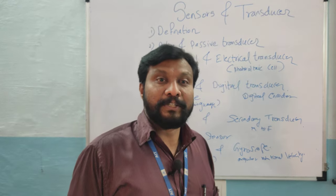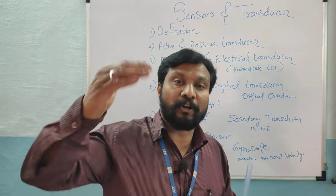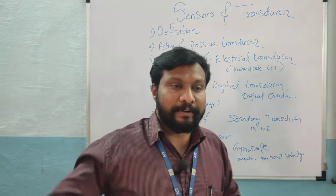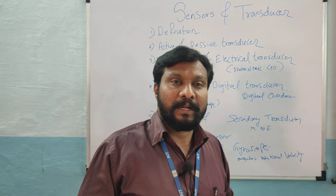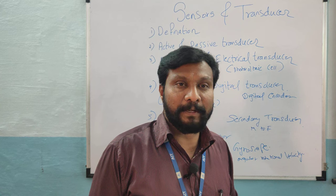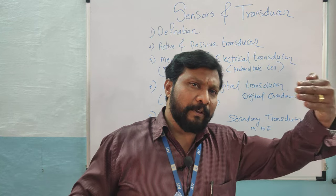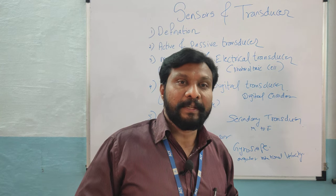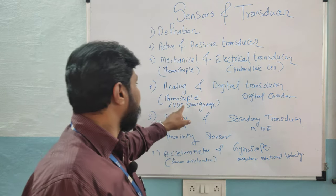Analog transducers generate an analog output corresponding to the physical quantity being measured. Examples include the thermocouple, LVDT, and strain gauge. LVDT — Linear Variable Displacement Transducer — has an iron core placed between primary and secondary windings. Depending upon the movement or displacement of the iron core, a voltage is generated, allowing us to measure the displacement of an object.